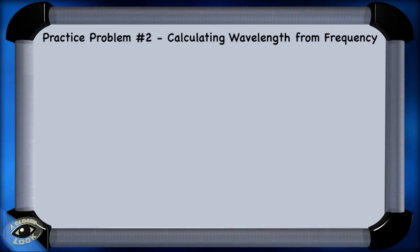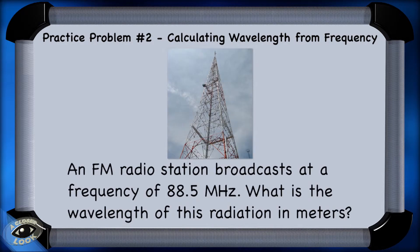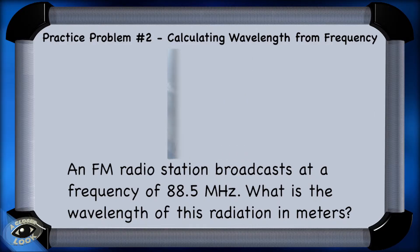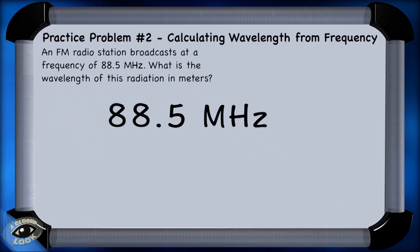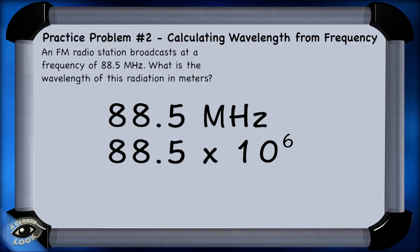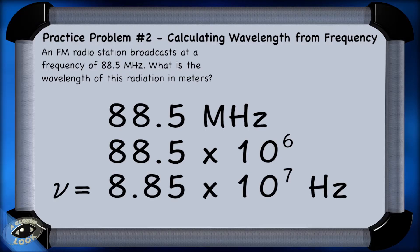In our second problem, we want to calculate the wavelength of an FM signal from a radio station. We're given the frequency of the radiation, but it's in megahertz, so we need to convert that to hertz before plugging it into our equation. Since the prefix mega means million, we convert megahertz to hertz by multiplying by one million. So 88.5 megahertz equals 8.85 times 10 to the seventh hertz.